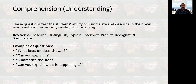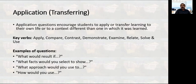The second level is Understanding. At this level, we are testing the ability of students to comprehend and understand what they have remembered. To test at this level, you can use keywords like: describe, distinguish, explain, interpret, predict, recognize, summarize. Example questions include: What factors or ideas can you show? Can you explain something? Summarize the steps in a certain process. Can you explain what is happening? If you ask like this, you are at level two of Bloom's taxonomy.